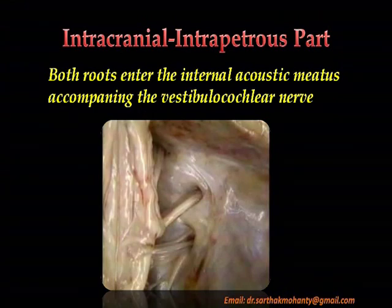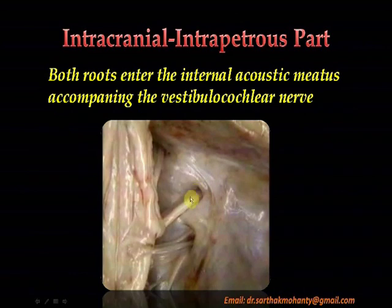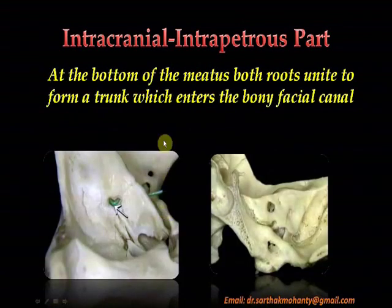After emerging from the lower border of the pons at the cerebellopontine angle, both the roots enter the internal acoustic meatus accompanying the vestibulocochlear nerve. Here is the internal acoustic meatus; this is the vestibulocochlear nerve and here lies the facial nerve. At the bottom of the meatus, both roots unite to form a trunk which enters the bony facial canal.